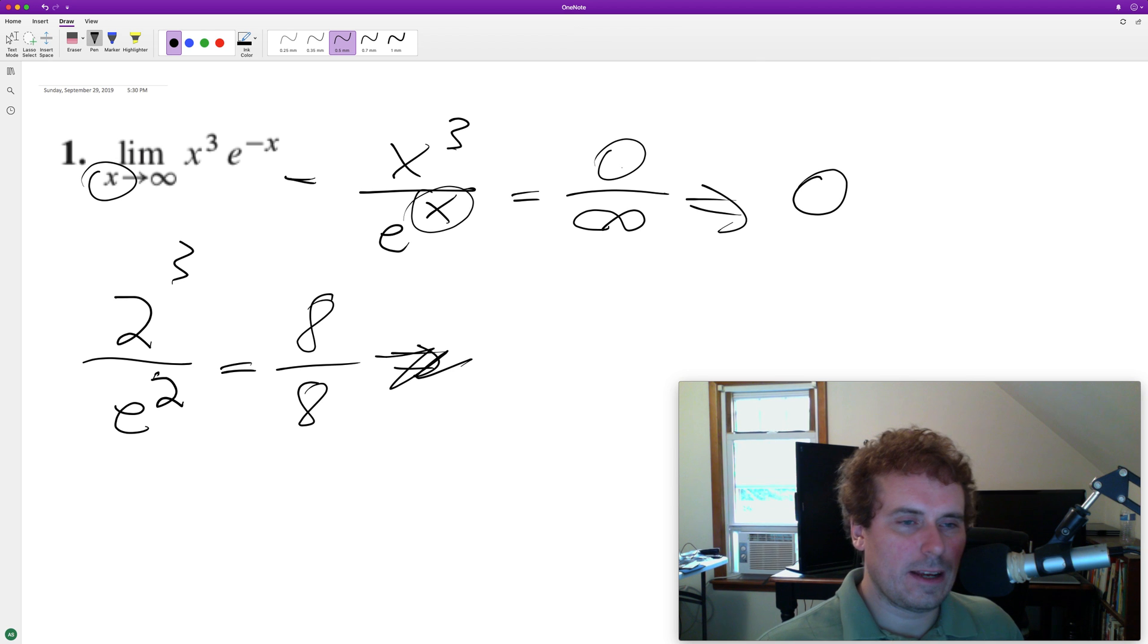But when we start to get into something like 2 raised to the 100, and e raised to the 100. You know, this is 100 cubed. So, it's still a fairly large number, but e raised to the 100 is a massive number.